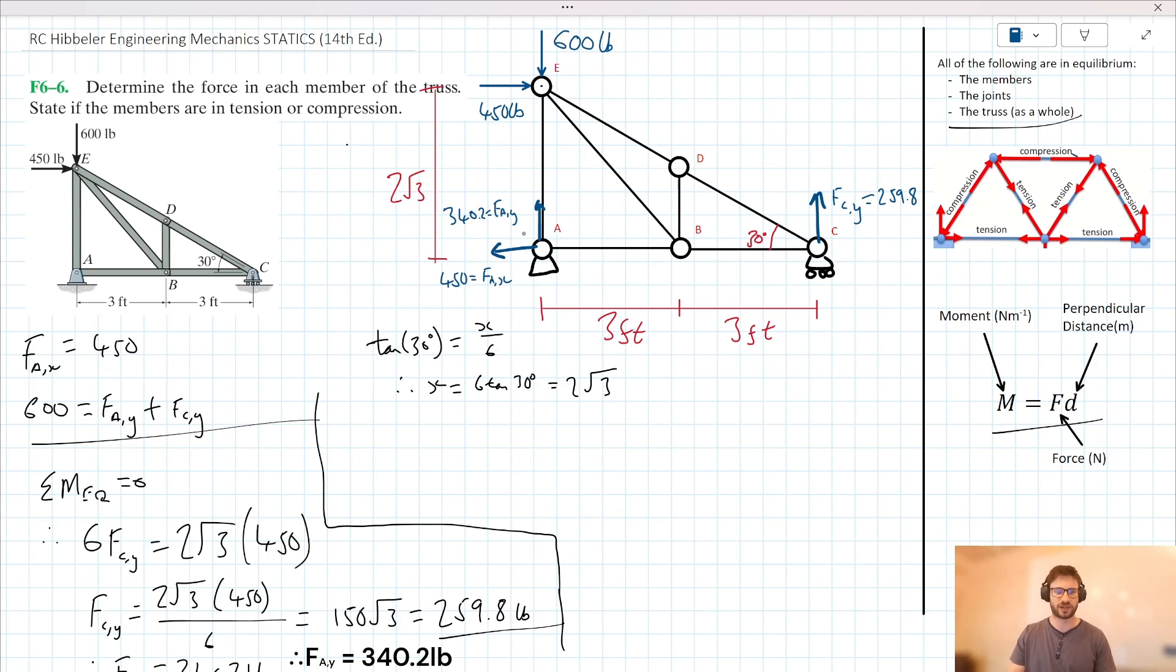So now that we have all the external forces acting on our truss, we can consider what's happening internally here. So let's have a look at joint A for starters. We know that we have this 340.2 acting up and 450 acting to the left. We can say then that AB acts like this and that AE acts like this. And we can say that AE is equal to 340.2, which is countering F_AY here.